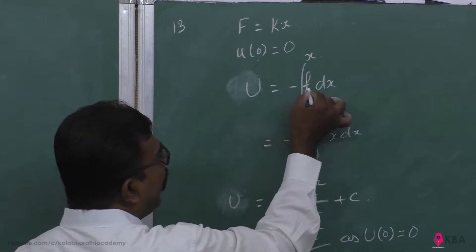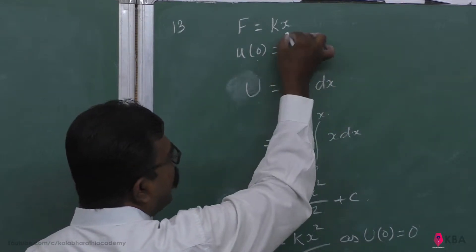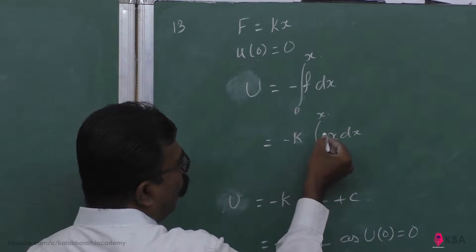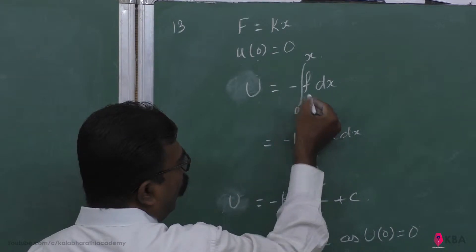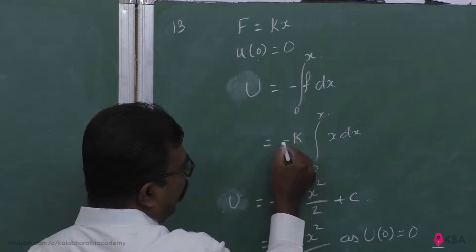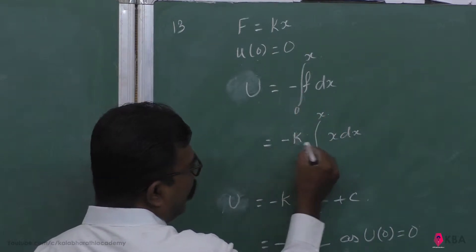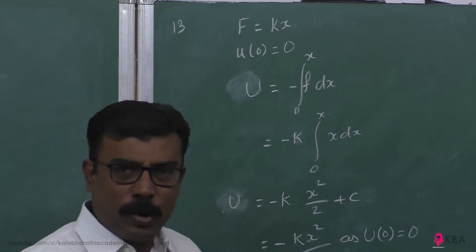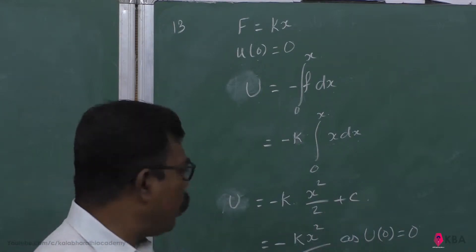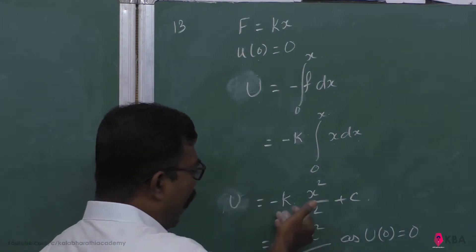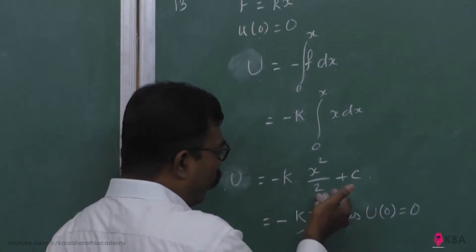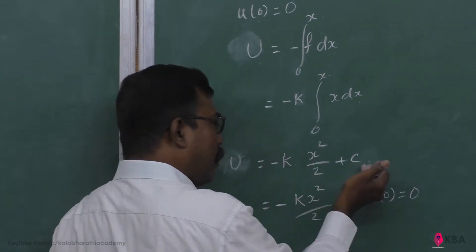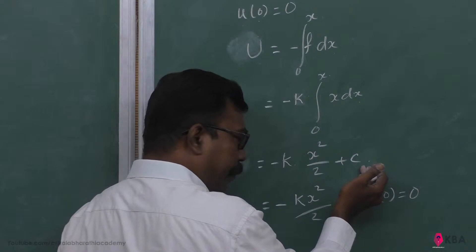So, F equals kx. Substituting, it becomes minus the integral of kx dx. The integral of x dx gives x squared by 2, so this becomes minus k times x squared by 2, plus some constant C.